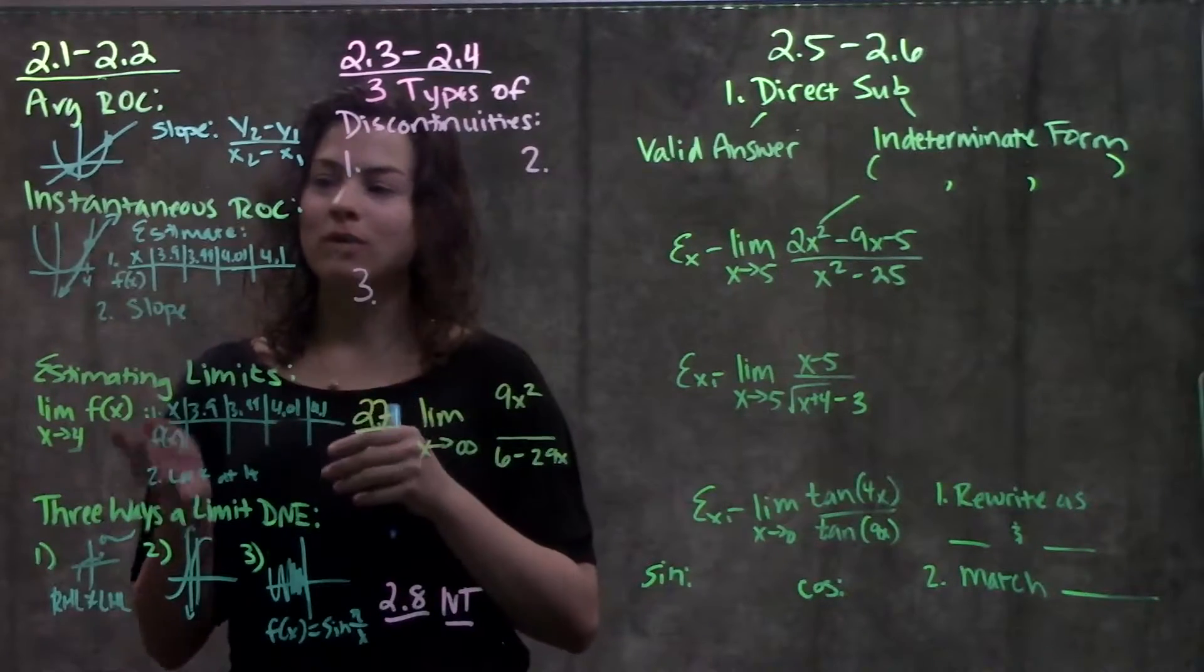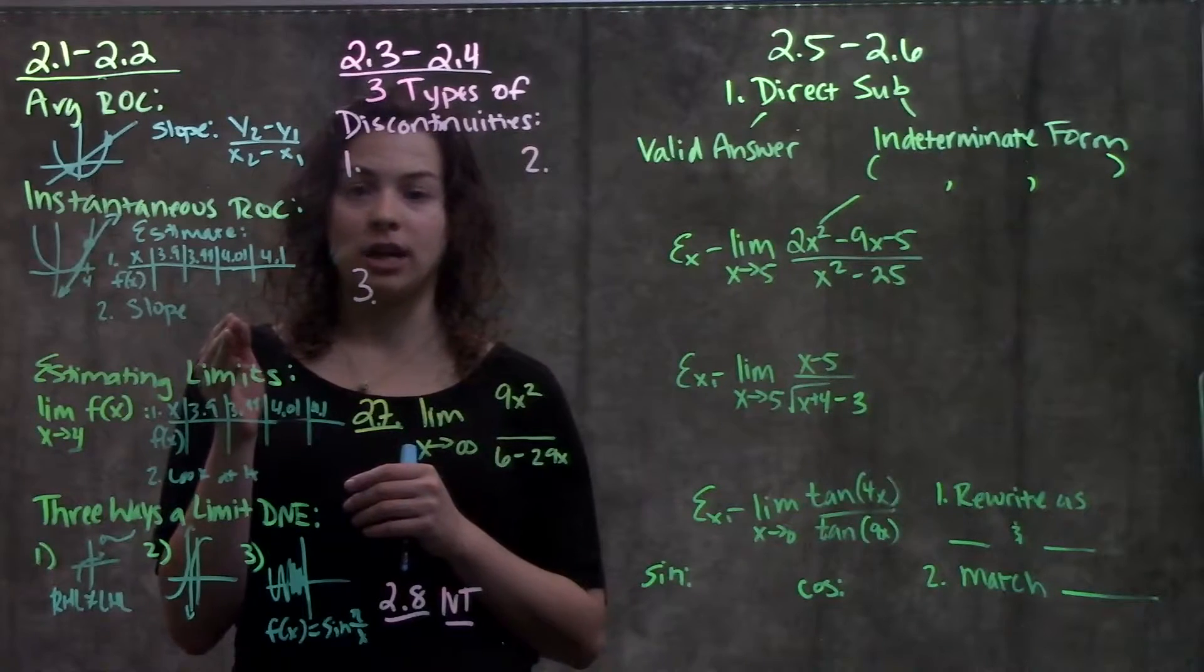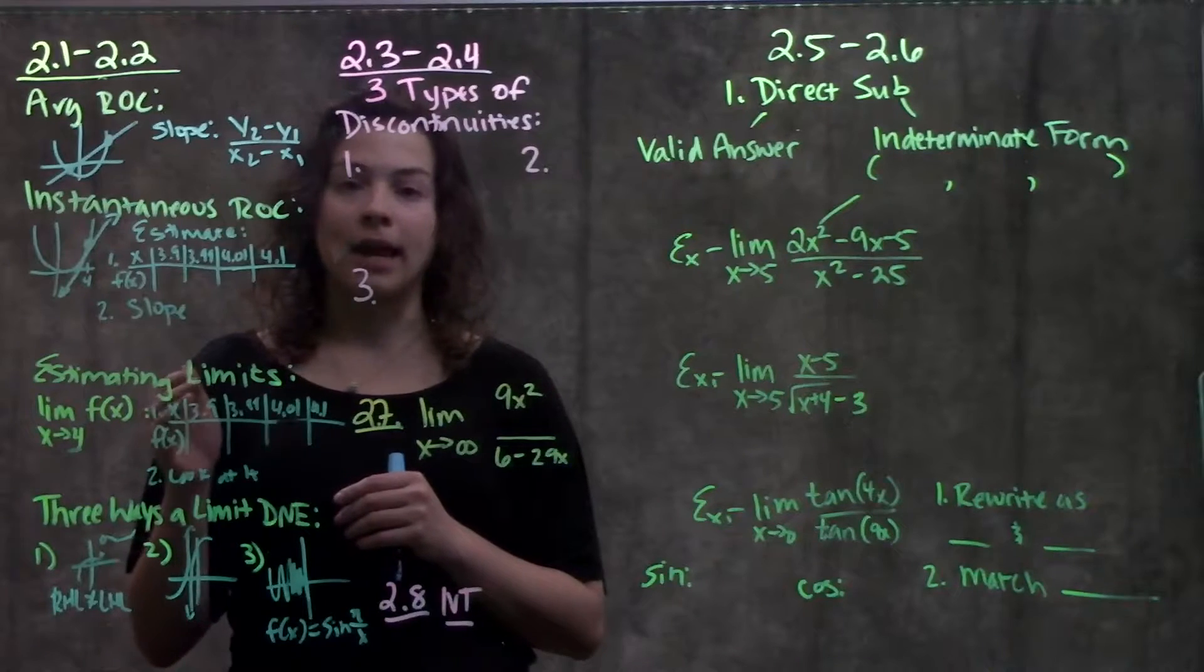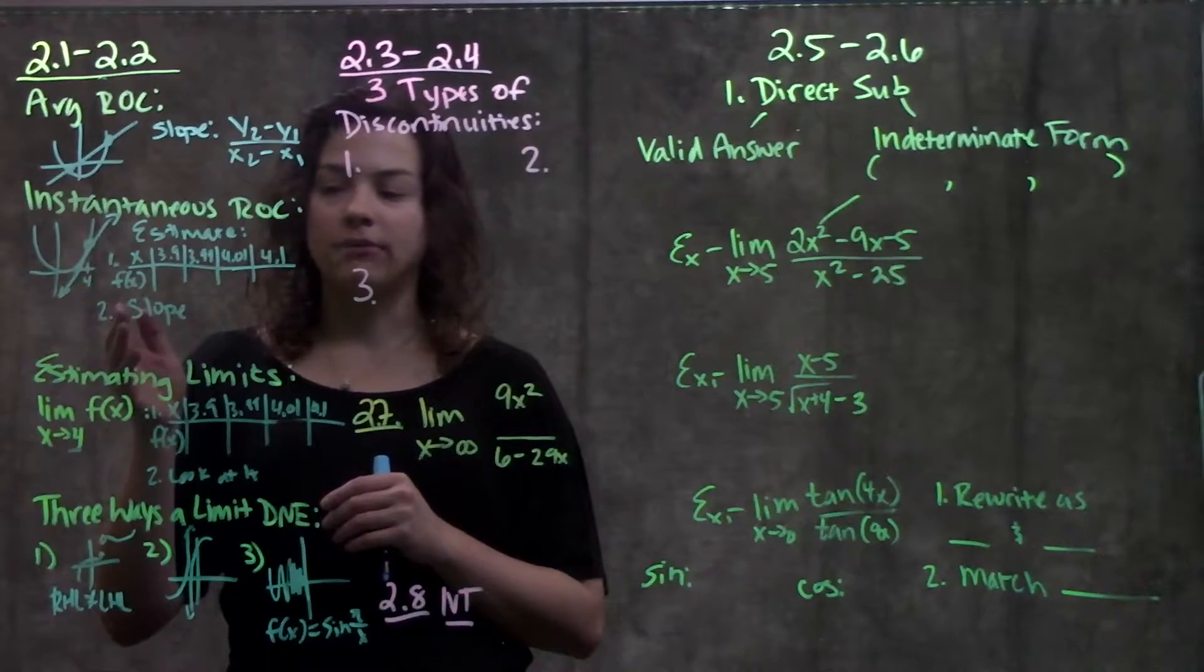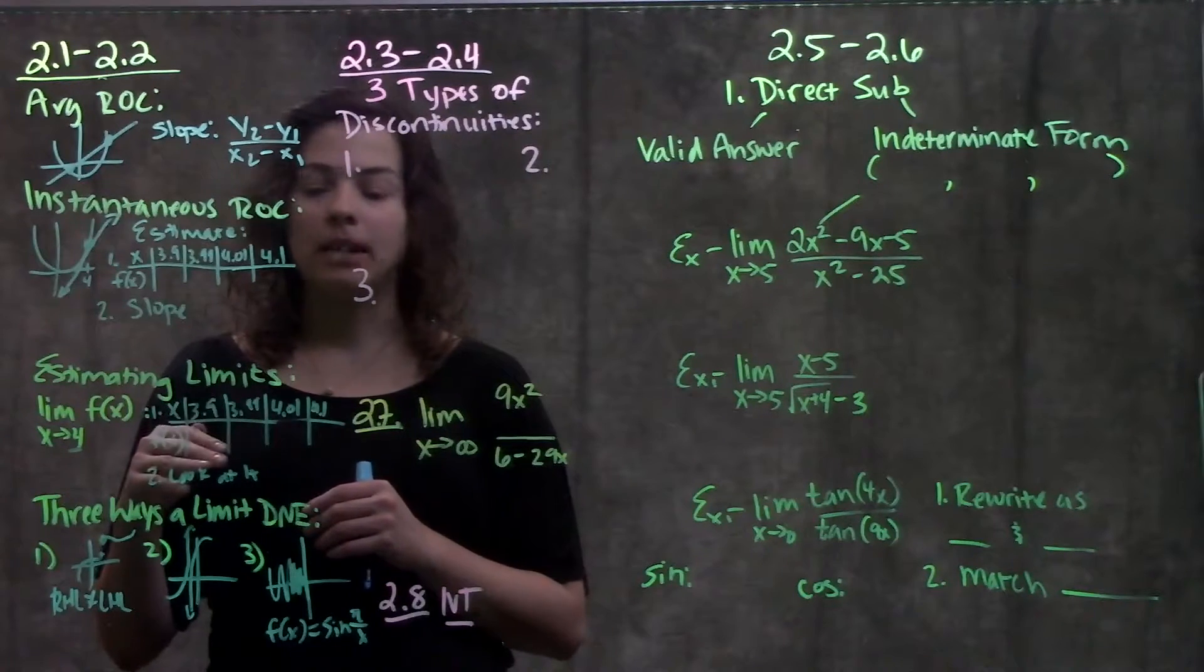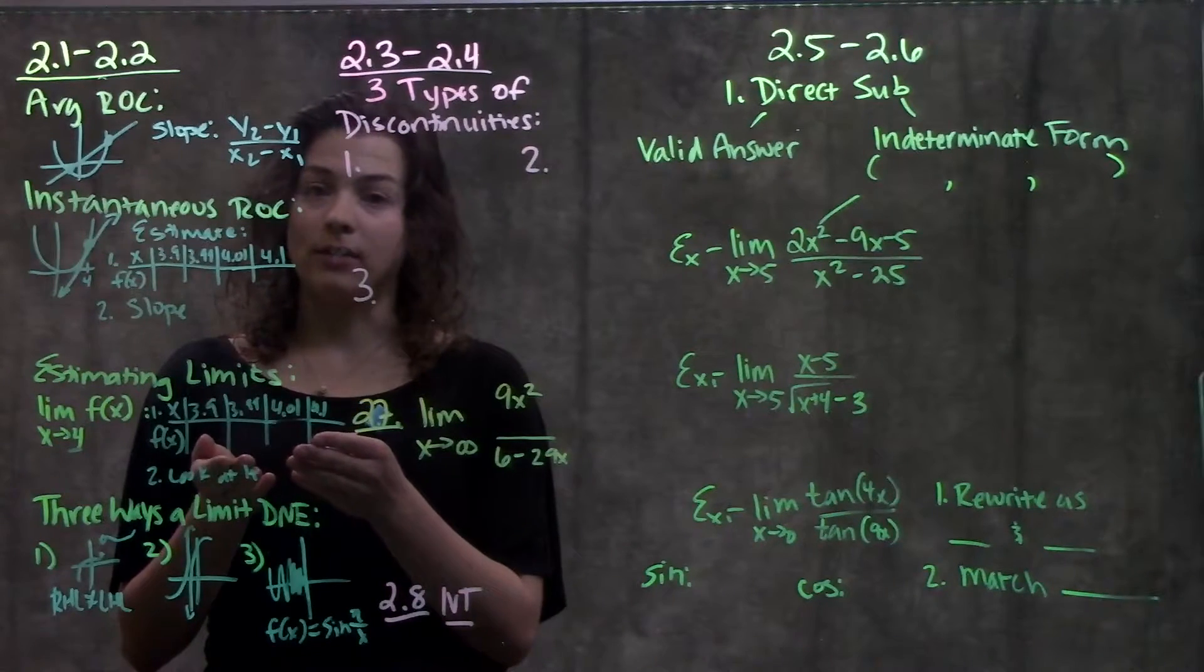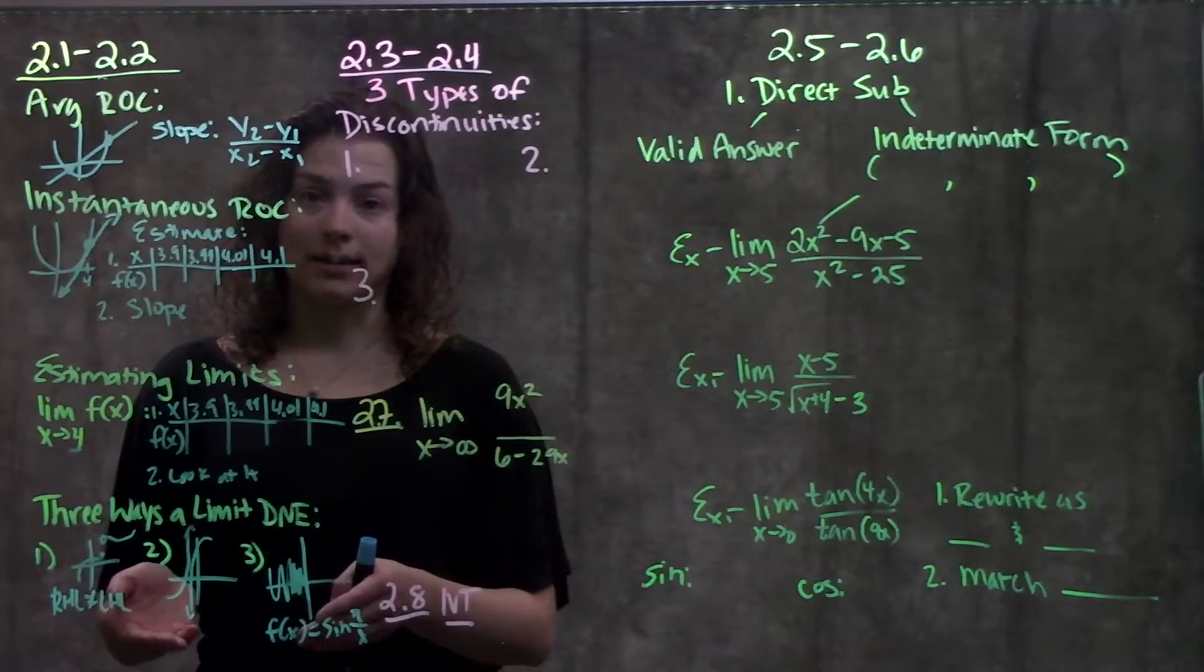Section 2.1 to 2.2, we talked about rate of change. We learned how to estimate instantaneous rate of change and we also learned how to estimate limits, both of them by plugging in x values closer and closer to our point of interest. When we're estimating rate of change, we then want to find the slope between all those points. When we're estimating a limit, we're only concerned about what the function is doing, so we're only concerned about these y values, so we just look at it. And don't forget the three ways a limit cannot exist.